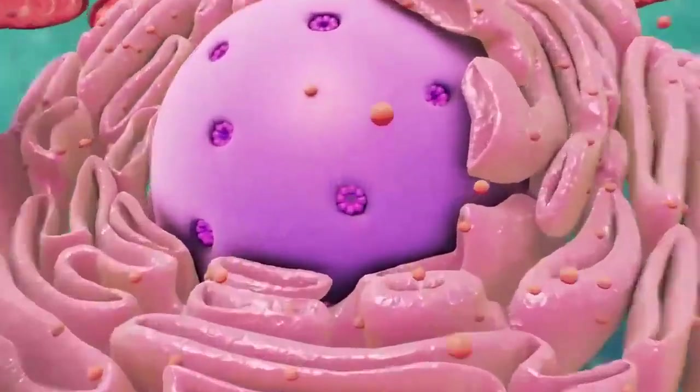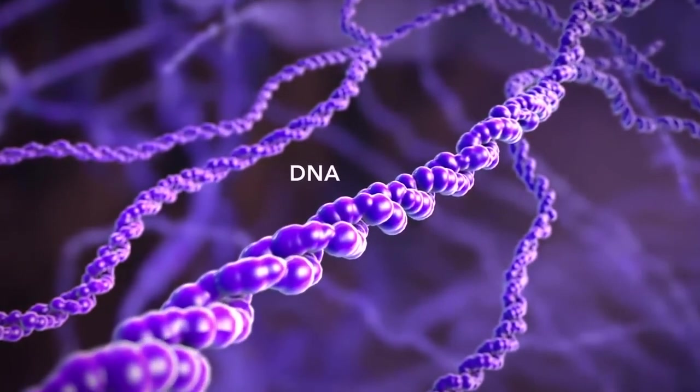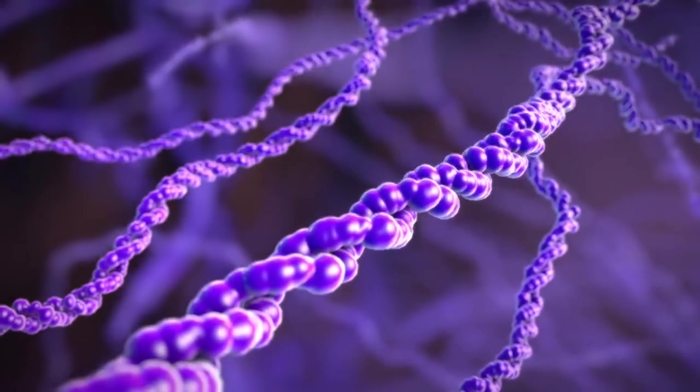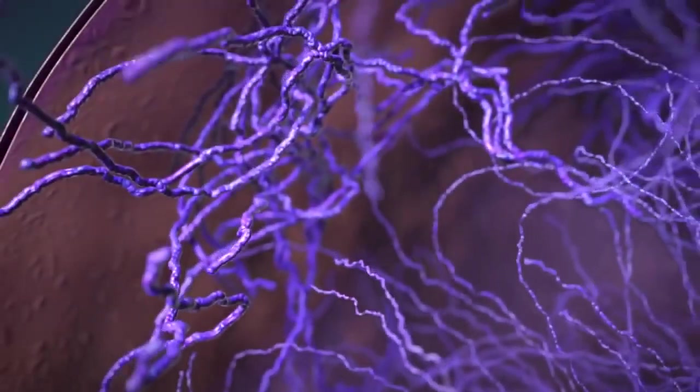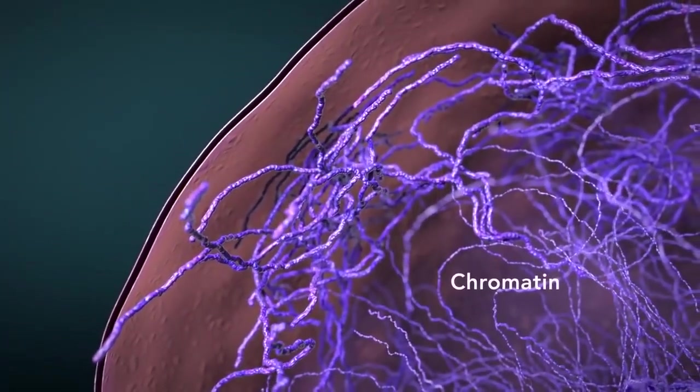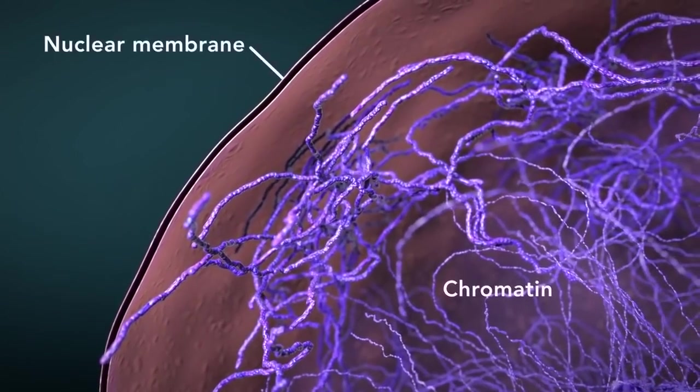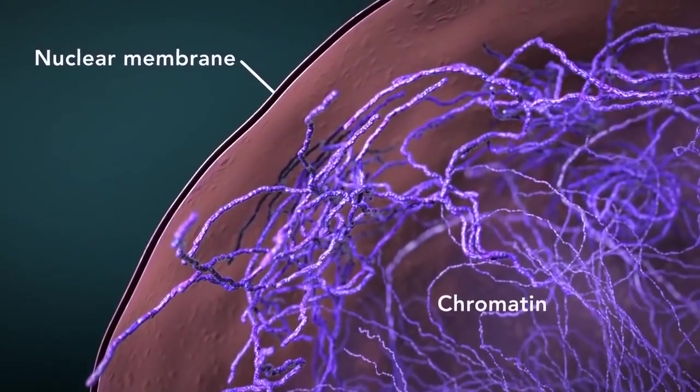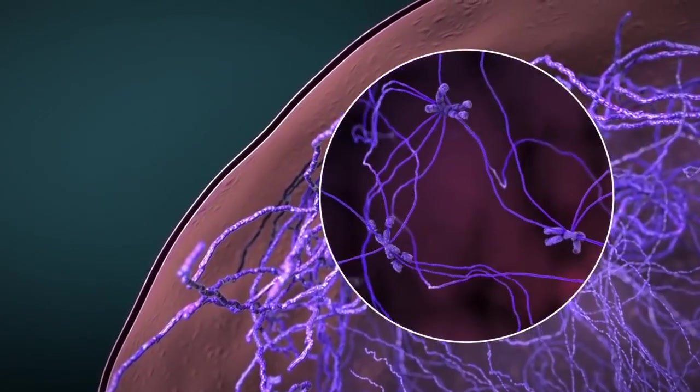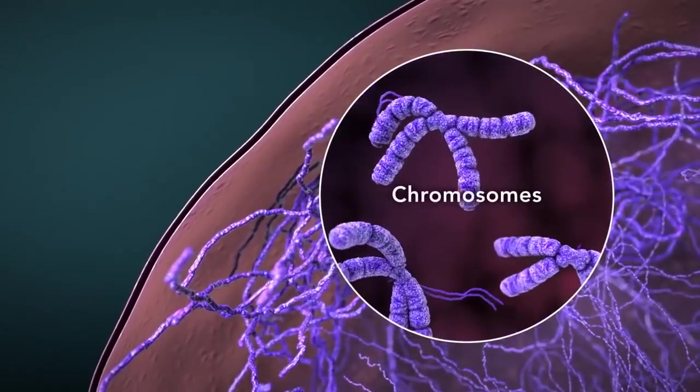The nucleus contains DNA or genetic material. DNA dictates what the cell is going to do and how it's going to do it. Chromatin is the tangled spread out form of DNA found inside the nuclear membrane. When a cell is ready to divide, DNA condenses into structures known as chromosomes.